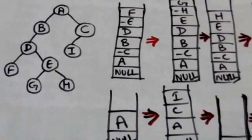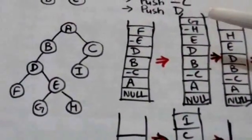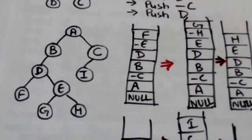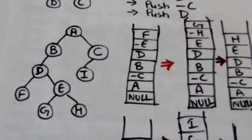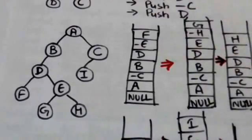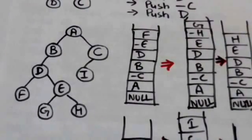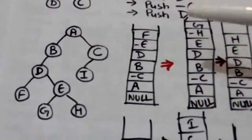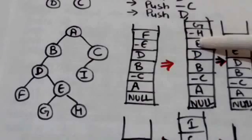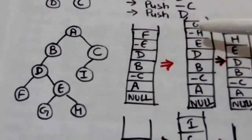Left child of node D is node F. Node F doesn't have any child, so there is nothing further to push into the stack. Now we will pop the top element of the stack. Node F is the top element, so node F will be popped and processed. Now minus E is at the top of the stack, so minus E is popped and its minus sign is removed — it becomes E. We will push E into the stack.